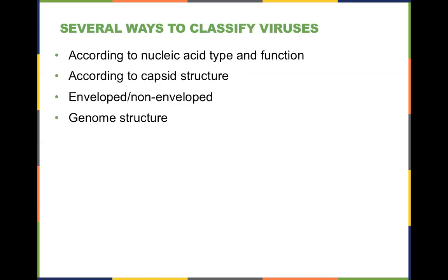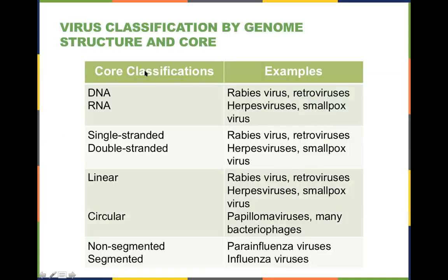Once you start studying viruses, you can classify them based on specific phenotypic characteristics. Core classifications refer to DNA or RNA type viruses, single-stranded or double-stranded, linear or circular. Some interesting ones include smallpox, papillomaviruses, and notably missing here are Ebola and hantaviruses, which create specific states of acute loss of life as a result of their infectious cycle.